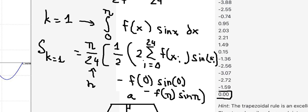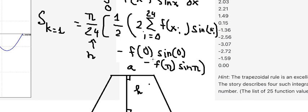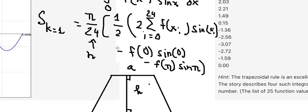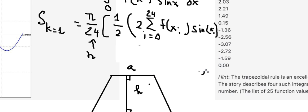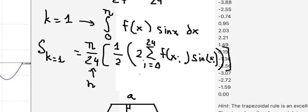Luckily, f(b) equals zero and f(0) equals zero, so this term equals zero and now we can simplify. To calculate this, we can use Excel.